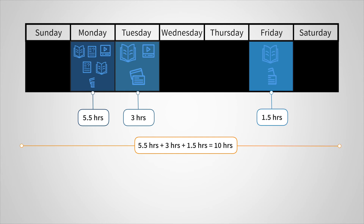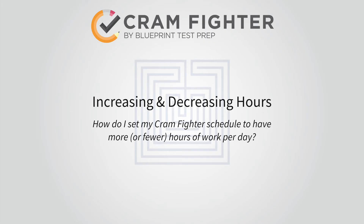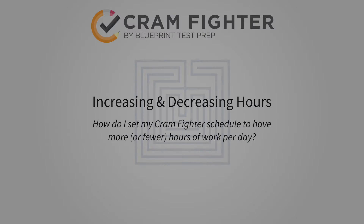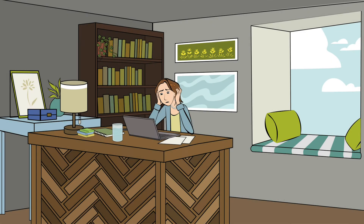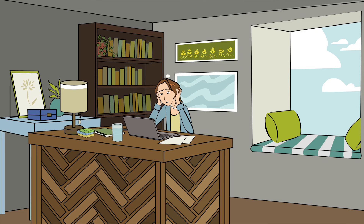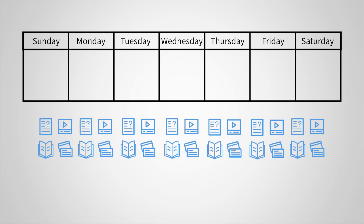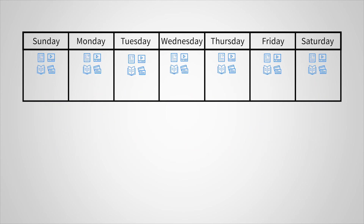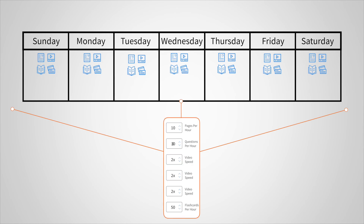We've found this works well for balancing different needs on different days. When you generate your schedule, what if you don't have as many hours per day of work as you were hoping? Let's say you were planning to study 8 hours a day. If you've put in all the resources you plan to use and your study plan is a bit lighter than you were hoping for, consider adjusting the pace you've set for tasks like reading and quizzing.